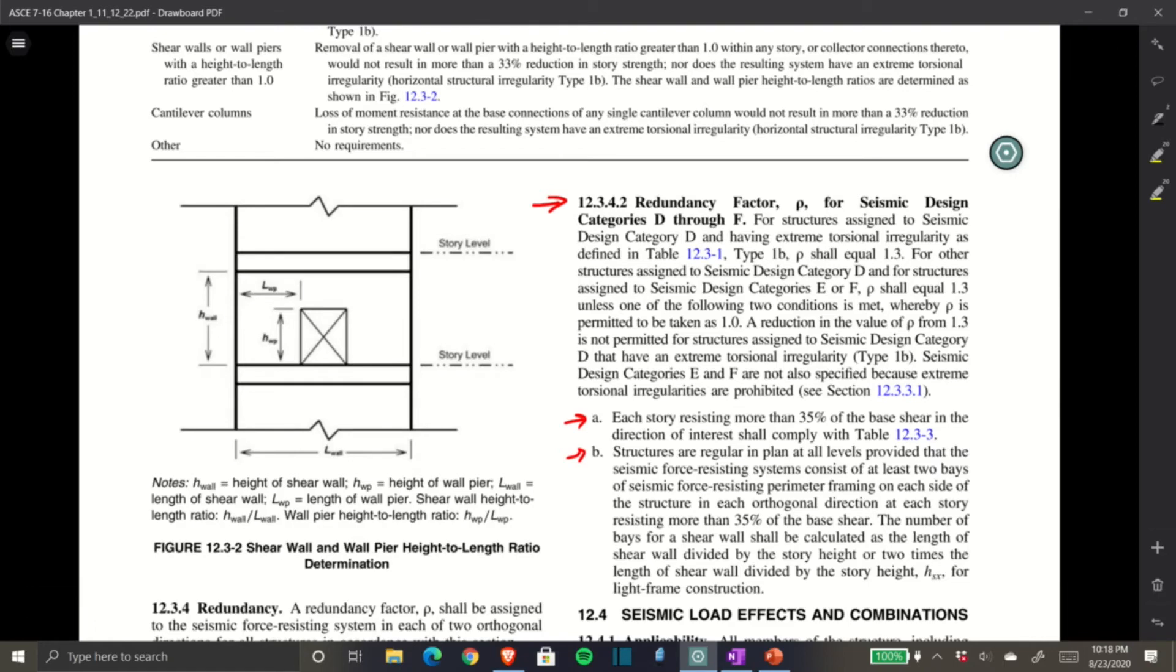So the two conditions are here and here. So first condition, each story resisting more than 35% of the base shear in the direction of interest shall comply with table 12.3-3. Or B, structures are regular in plan at all levels, provided that the seismic force resisting system consists of at least two bays of seismic force resisting perimeter framing on each side of the structure in each orthogonal direction at each story resisting more than 35% of the base shear. The number of bays for a shear wall shall be calculated as the length of shear wall divided by the story height, or two times the length of shear wall divided by the story height, HSX, for light frame construction. Well, that's us. And I'm not gonna lie, this video is getting super long. So I did already run through that. Basically, it's based on your overall plan view of your structure and where your shear walls are located and stuff like that and how forces are distributing. I'm just gonna tell you real quick that we do fall under that category. So our rho is permitted to equal 1.0.